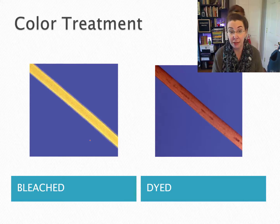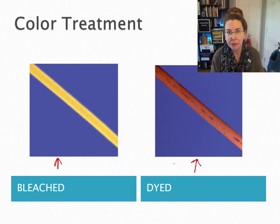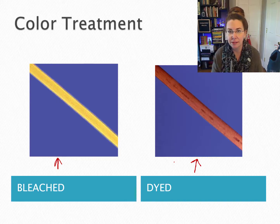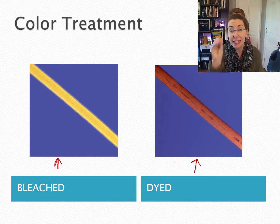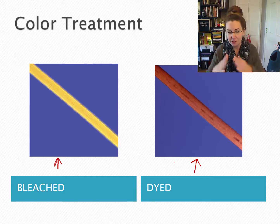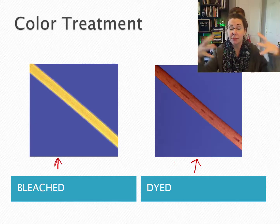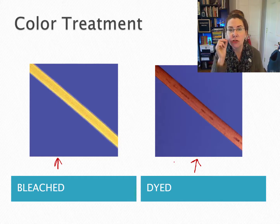Let's take a look at color treatment in hair. Here we have hair that has been bleached and hair that has been dyed. The reason why bleaching is so damaging to hair is because the melanin is in the cortex, and the cortex is hidden under the cuticle. In order to bleach hair, one has to get to the melanin and chemically alter or destroy it, which means those scales of the cuticle have to be lifted up so that the cortex can be accessed.